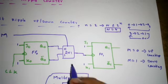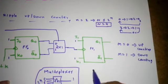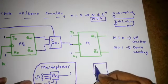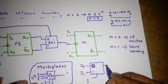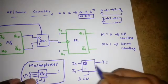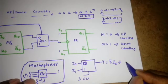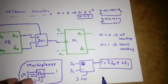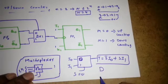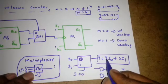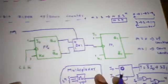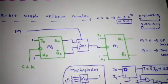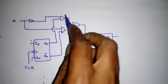In textbooks and gate exams, the 2:1 MUX is sometimes replaced by an equivalent AND-OR gate circuit. The 2:1 MUX output expression is: Y = S̄·I0 + S·I1. This is implemented with two AND gates feeding one OR gate. Here the select line S is the mode M, I0 is Q0, and I1 is Q0-bar. So the first AND gate takes M-bar and Q0; the second AND gate takes M and Q0-bar; both feed an OR gate.